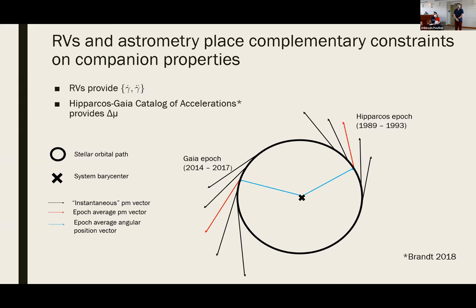On whether direct imaging could play a role in constraining some of these outer companions: the majority of the work so far for this method has been on HD191939 in particular. After speaking with colleagues about direct imaging, it looks like it's not possible for this companion in particular given the separation. But in principle, direct imaging could provide another complementary constraint.